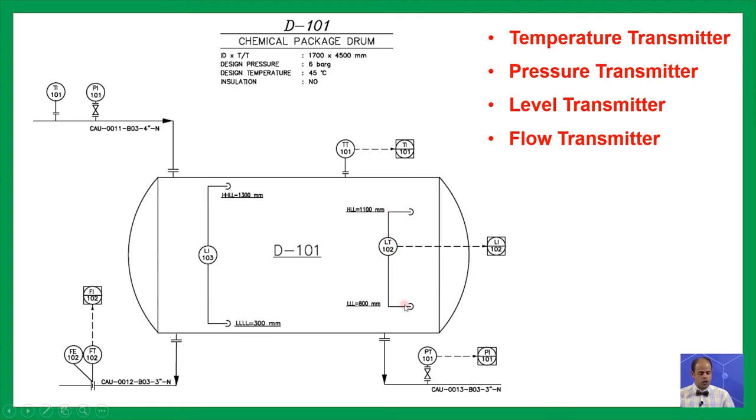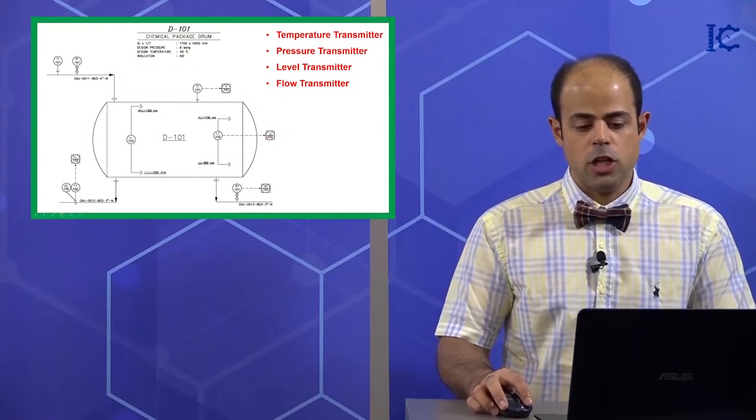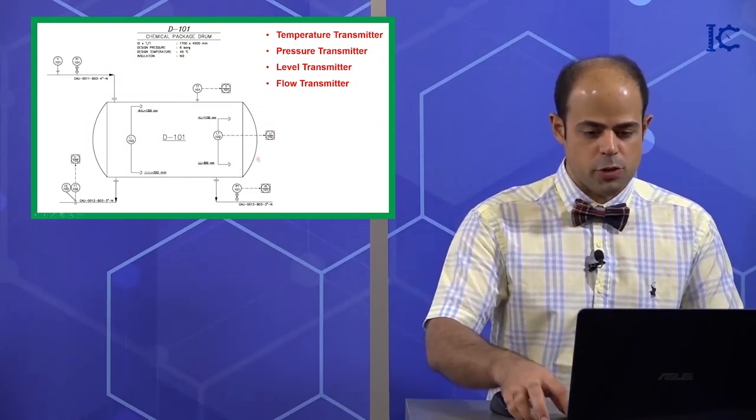And here you can find a level transmitter too with the help of side connection. We just showed that it was installed or it's being installed on the drum as well. Finally the related data of this one is going to be sent to the control room.